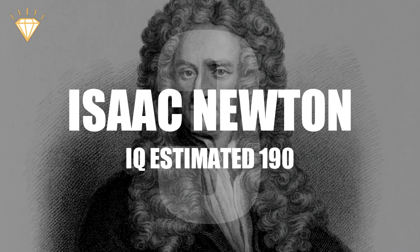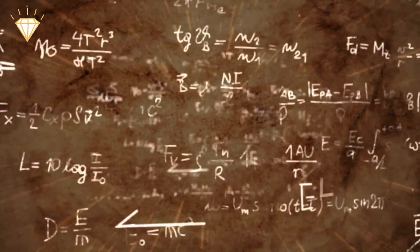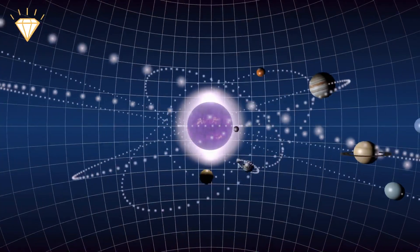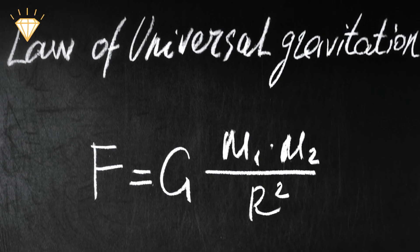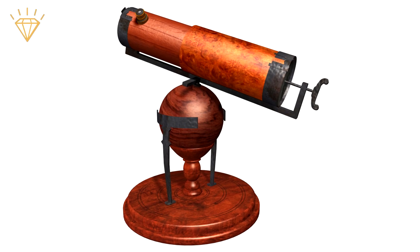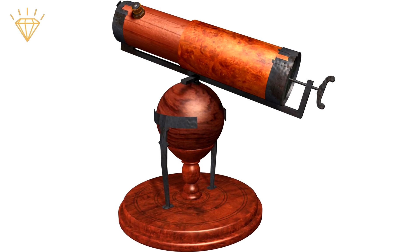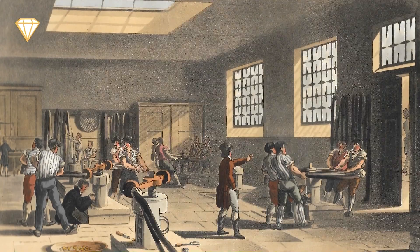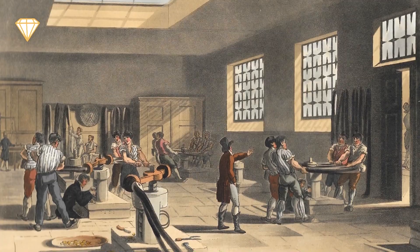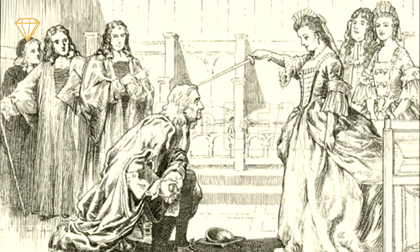Number 3, Isaac Newton. Mathematician, astronomer, physicist and philosopher, Newton formulated the laws of motion and universal gravitation. He built the first reflecting telescope, called the Newtonian telescope. He developed the notion of Newtonian fluids as well as becoming master of the Royal Mint in 1700 and knighted in 1705.